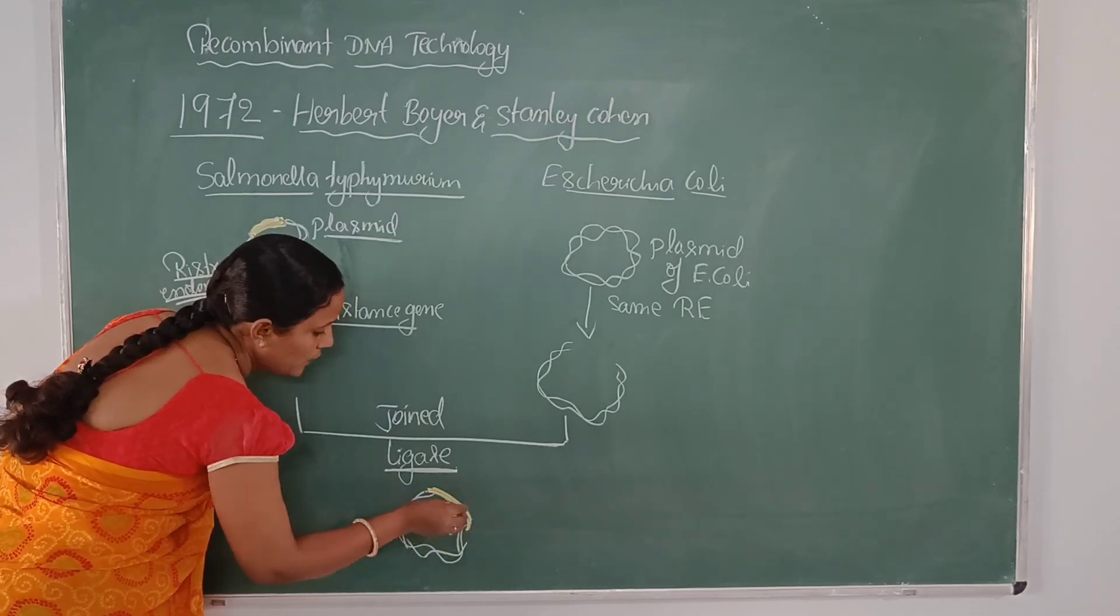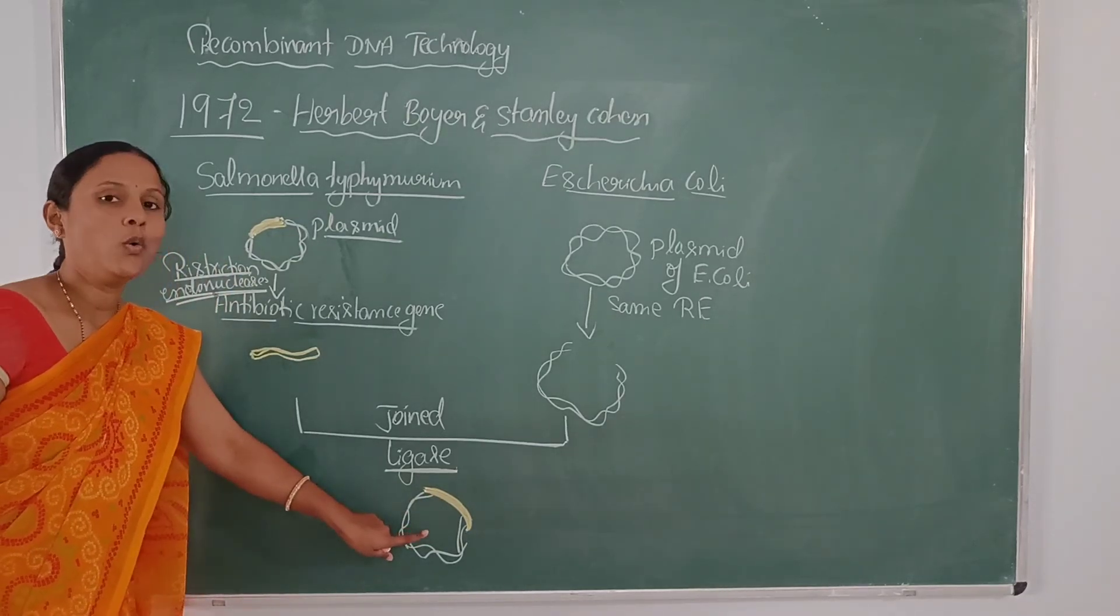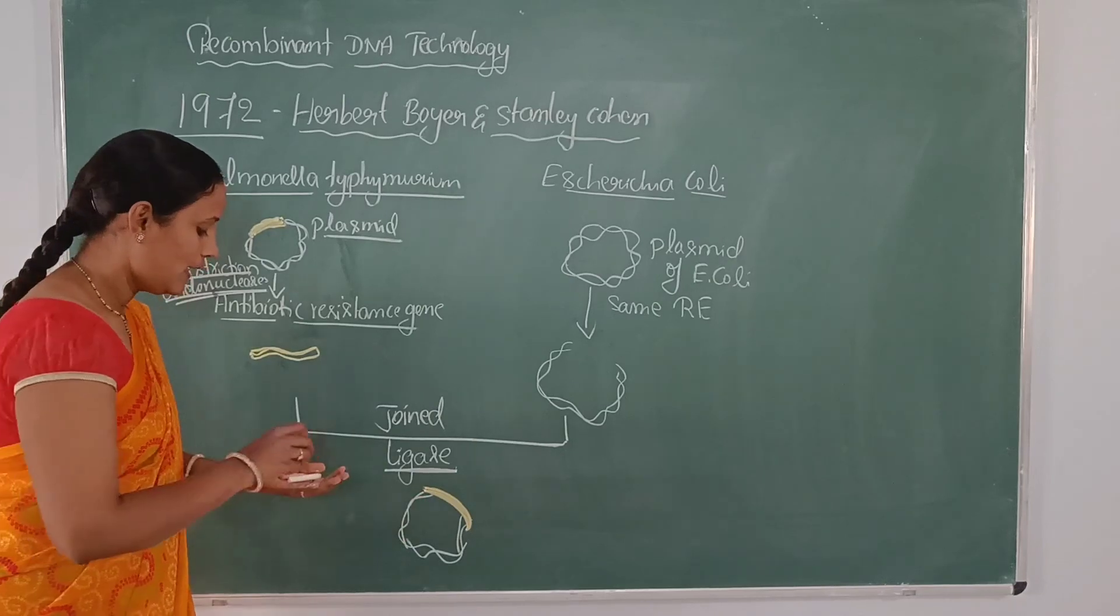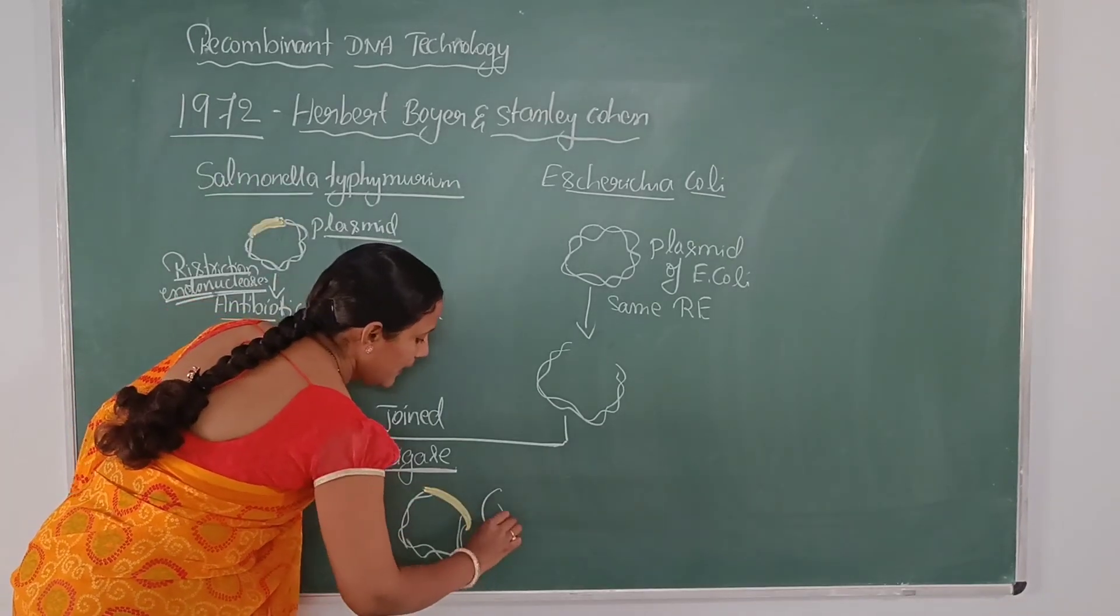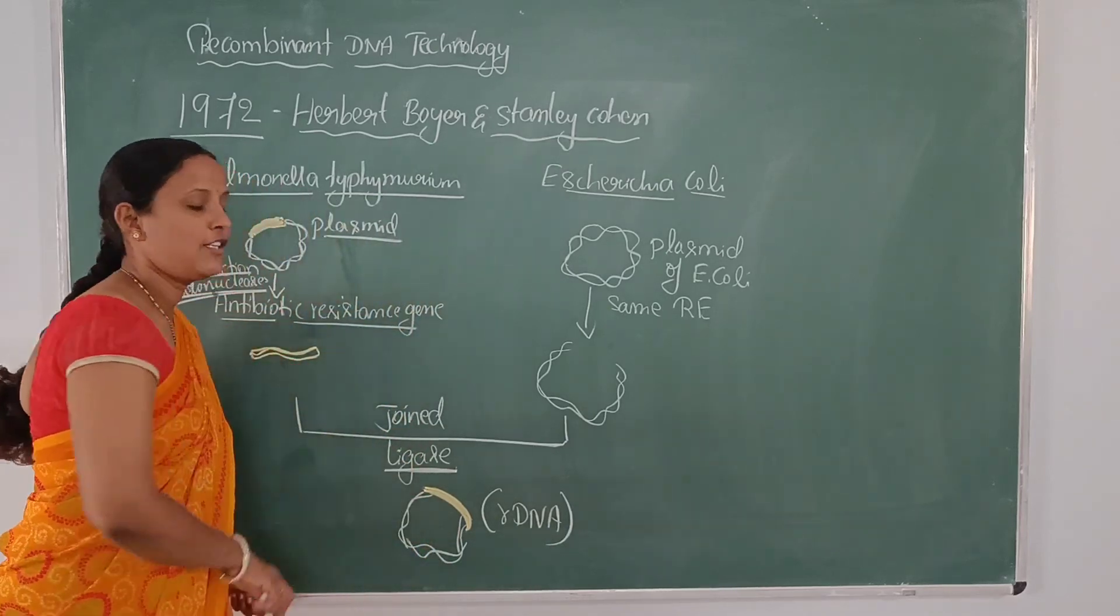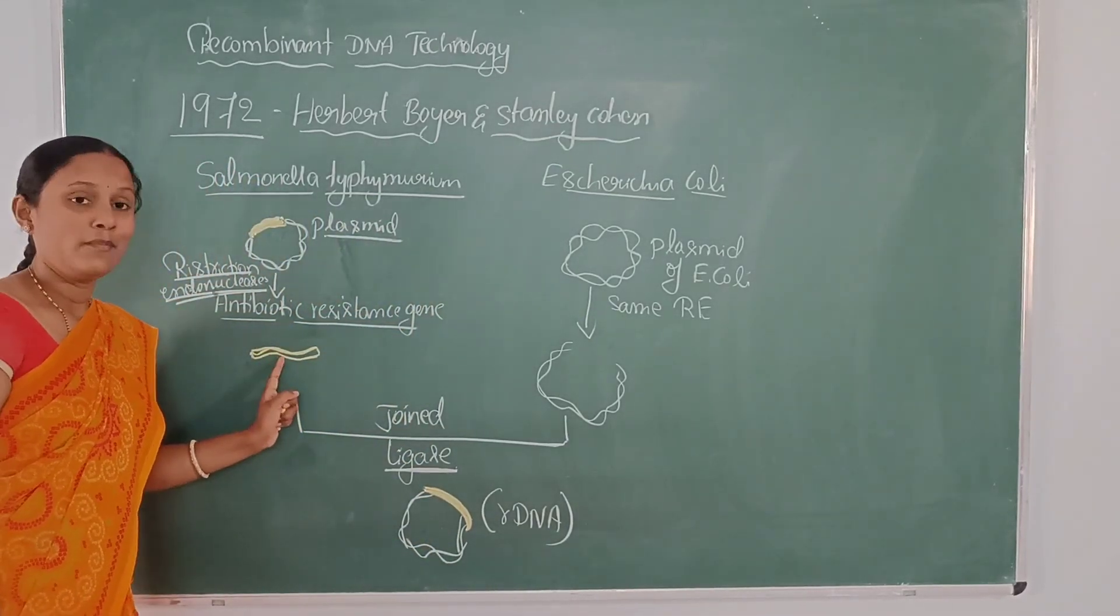There is a joining of two pieces of DNA. Now, the alien piece of DNA is integrated with the host DNA or the chromosome. Now, we can call it as a recombinant DNA. It has recombined with the alien piece of DNA.